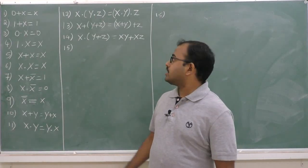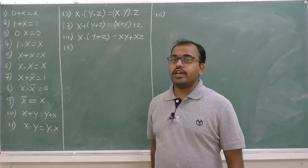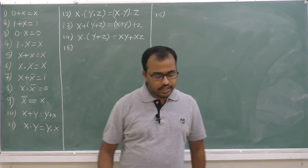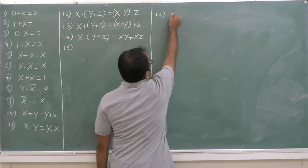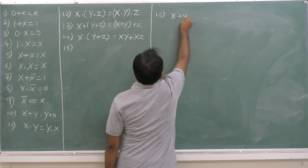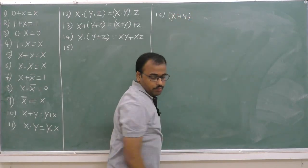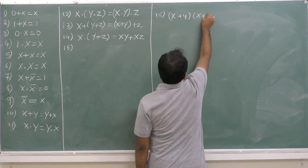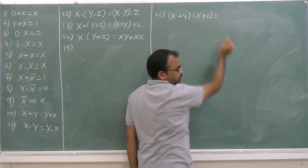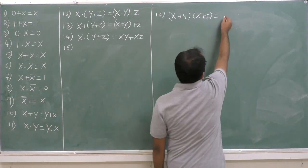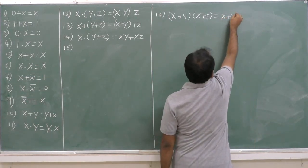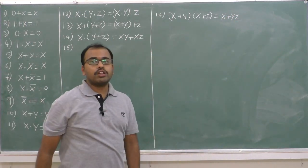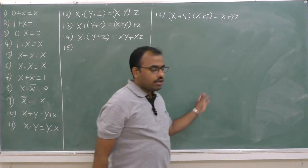So far, we have discussed 14 theorems. Now let us prove theorem number 15, that is (x plus y) into (x plus z) is equal to x plus y into z. This is the distributive law — another theorem to prove.